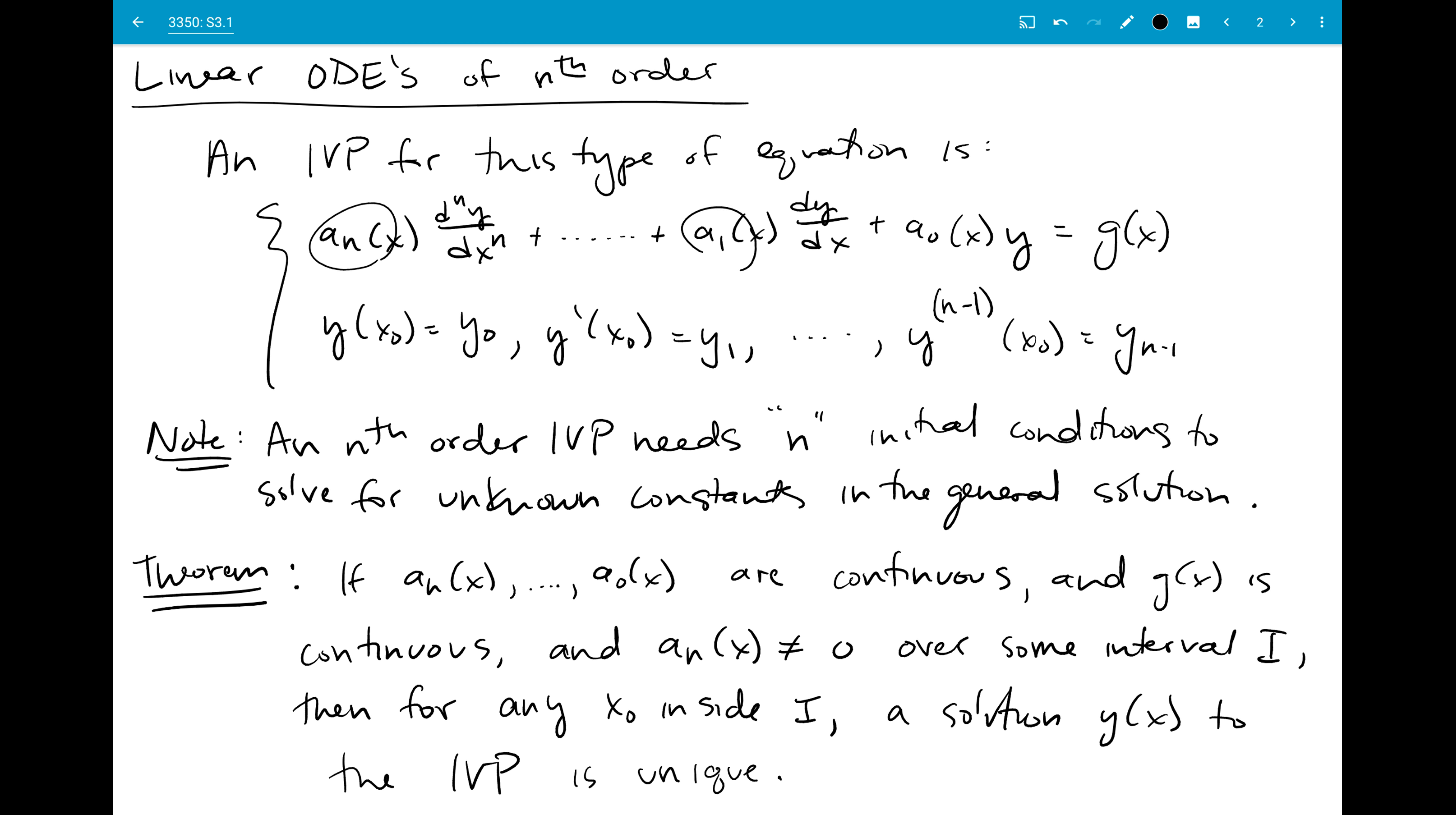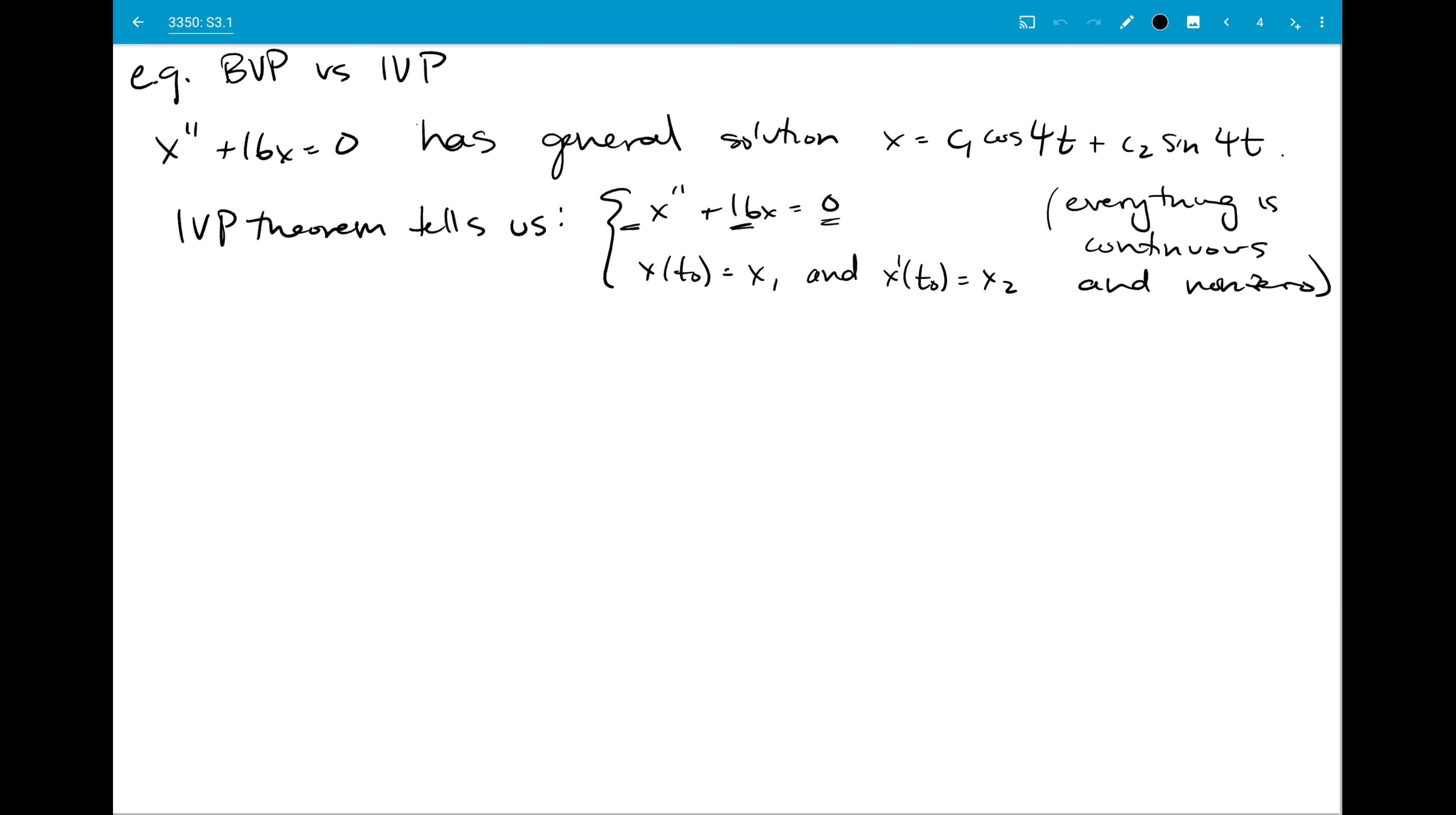So we were told we had to check for these a1 through an and g. We just check them, they're numbers. So if we consider that initial value problem with any t0, we're going to have unique solutions. That would be a pretty boring problem to have for an initial value problem theorem question.